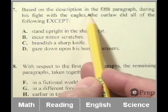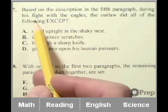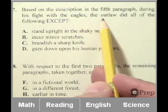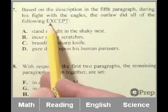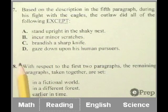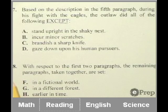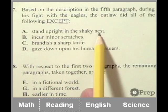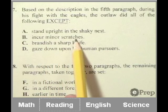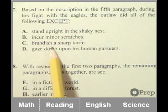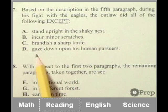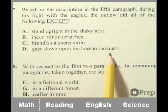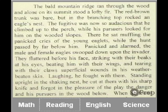Based on the description in the fifth paragraph, during his fight with the Eagles, the outlaw did all of the following except... So let's take a look at the list very quickly, and then look at part of the fifth paragraph. Did he stand upright in the shaky nest? Did he incur minor scratches? Did he brandish a sharp knife? And did he gaze down upon his human pursuers?